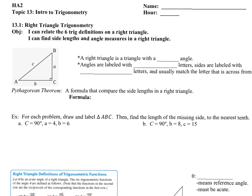The first part of lesson 13.1, right triangle trigonometry. By definition, a right triangle is any triangle that has a right angle, and a right angle is an angle that forms 90 degrees.